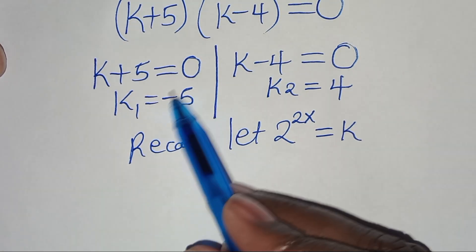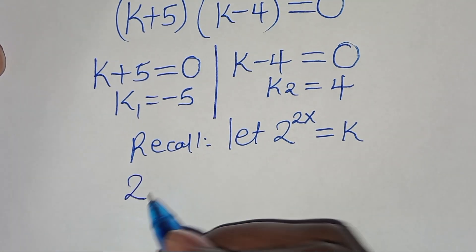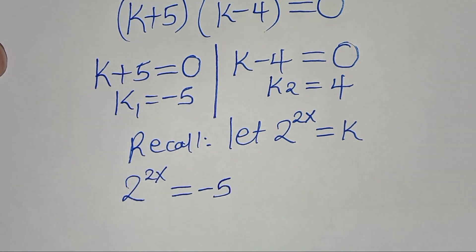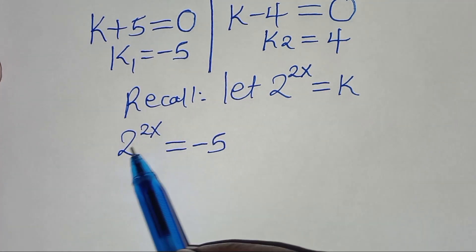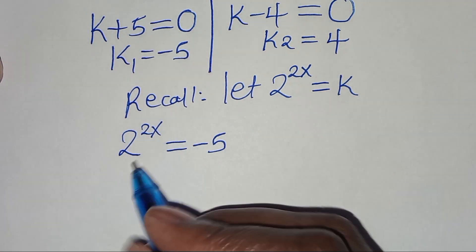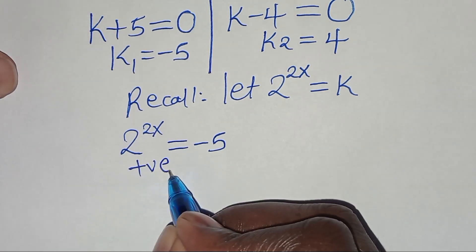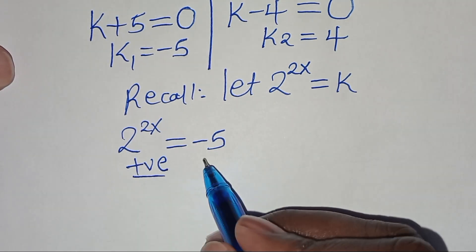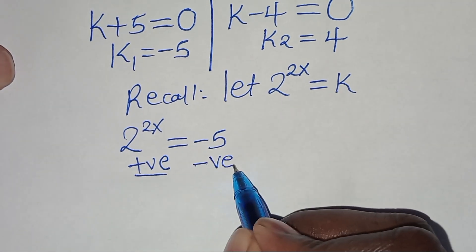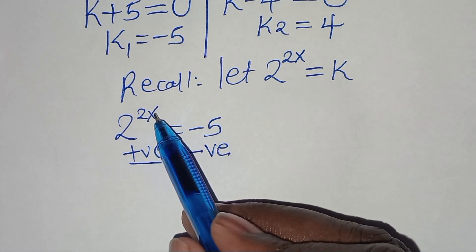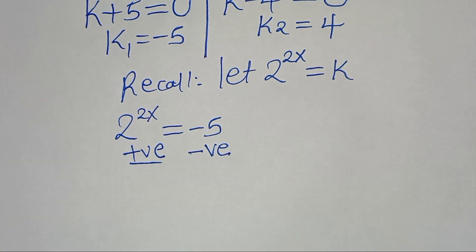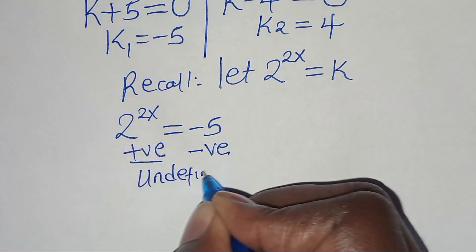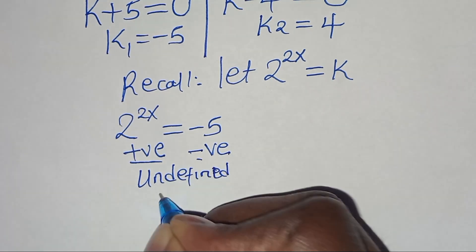Starting with the first solution, k equals minus 5, so 2 to the power of 2x equals minus 5. We cannot proceed to find x for this case because the result is undefined — a positive exponential cannot equal a negative number, so this gives undefined results.